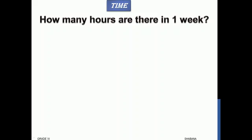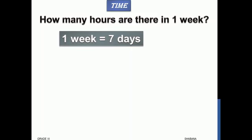The next question: how many hours are there in one week? First we have to find what is a week. One week has seven days — Sunday, Monday, Tuesday, Wednesday, Thursday, Friday, Saturday. So one week has seven days. Now we have to find how many hours are there in seven days.